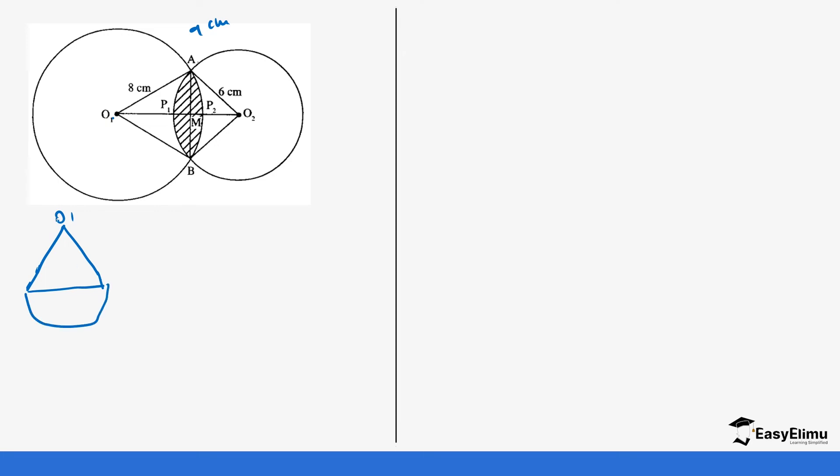We have O1 and then we have A and B and then P2. That's how it looks like for the first one, and then there's a perpendicular bisector. This is eight centimeters, eight centimeters. Remember AB is nine, so this perpendicular bisector bisects AB equally. So this is 4.5, this is 4.5.